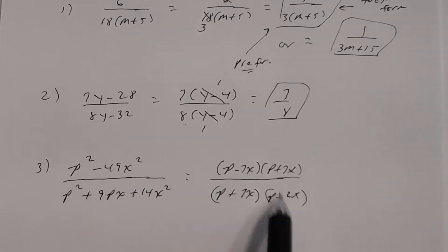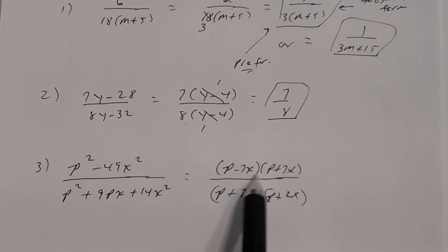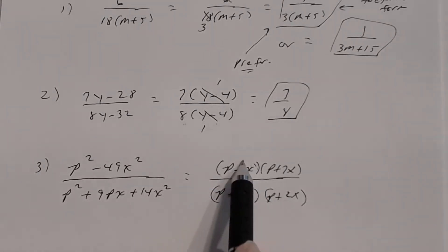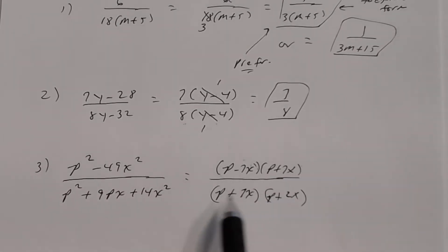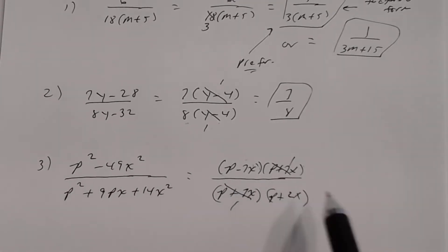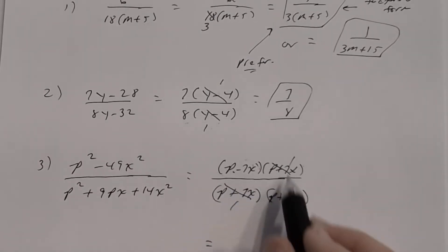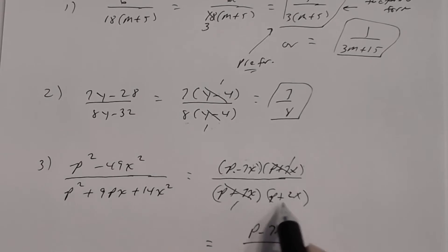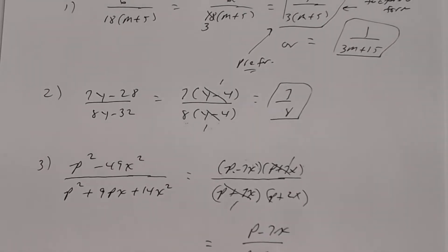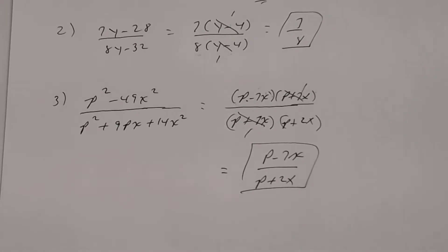Now reduce. I have (p − 7x) as a factor — checking the denominator, no match. I have (p + 7x) — yes, that appears in the denominator as a factor, so those divide out. The answer is (p − 7x) divided by (p + 2x).